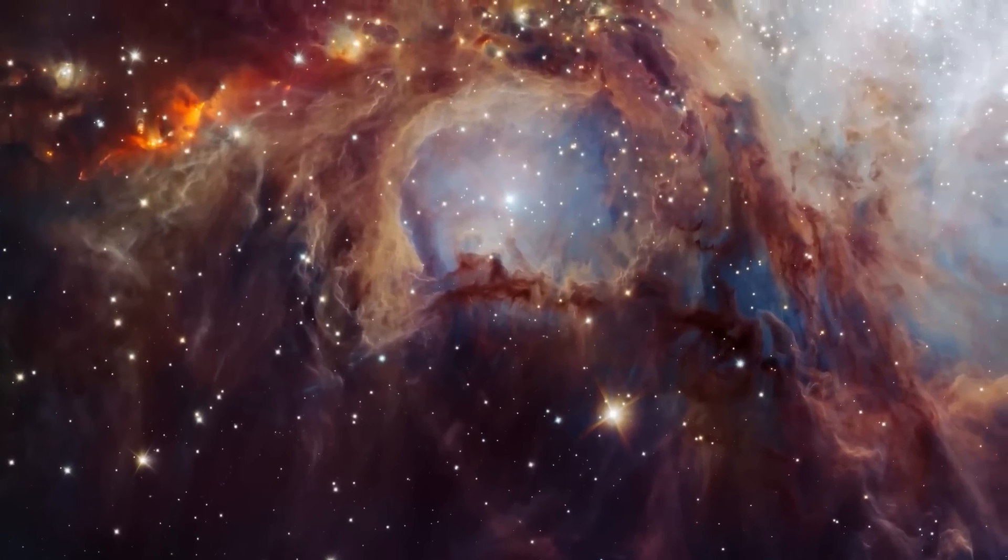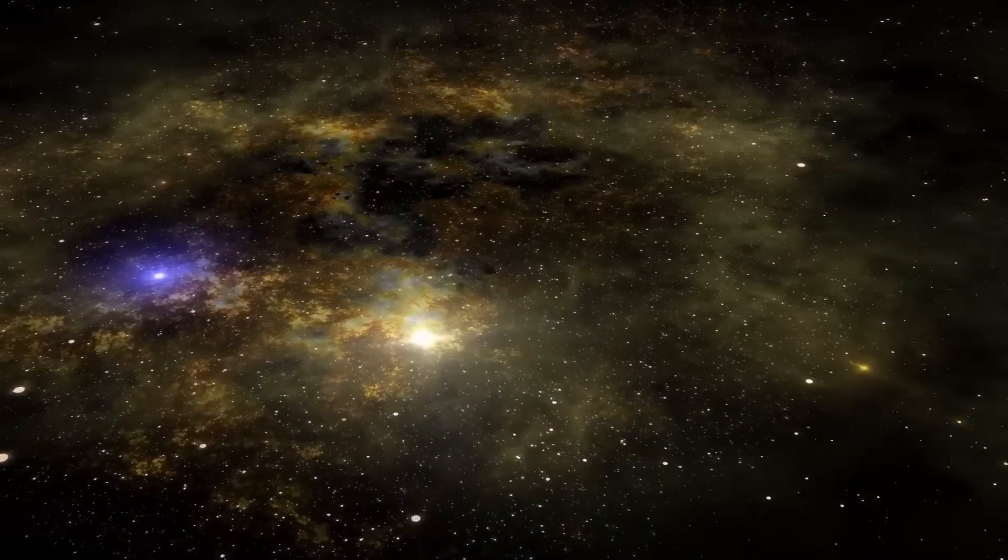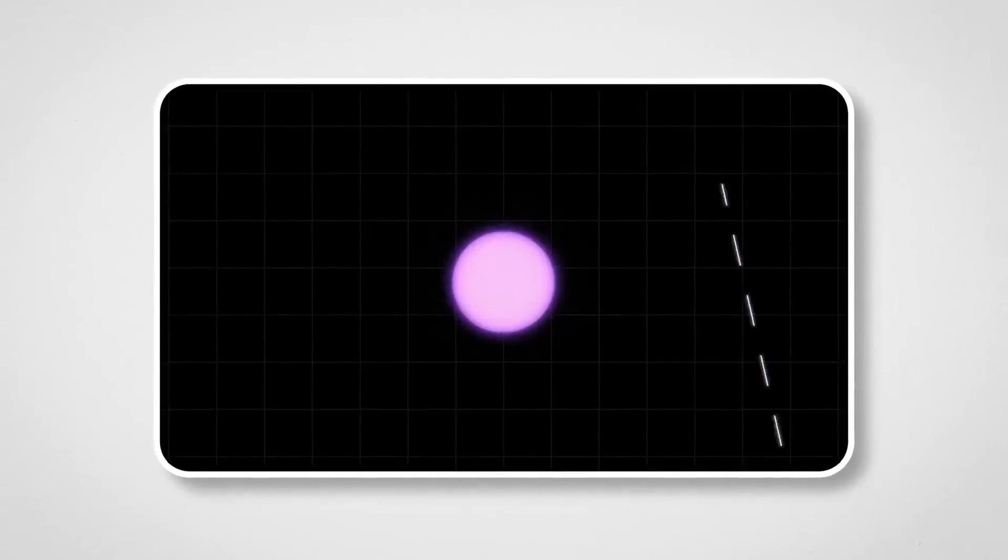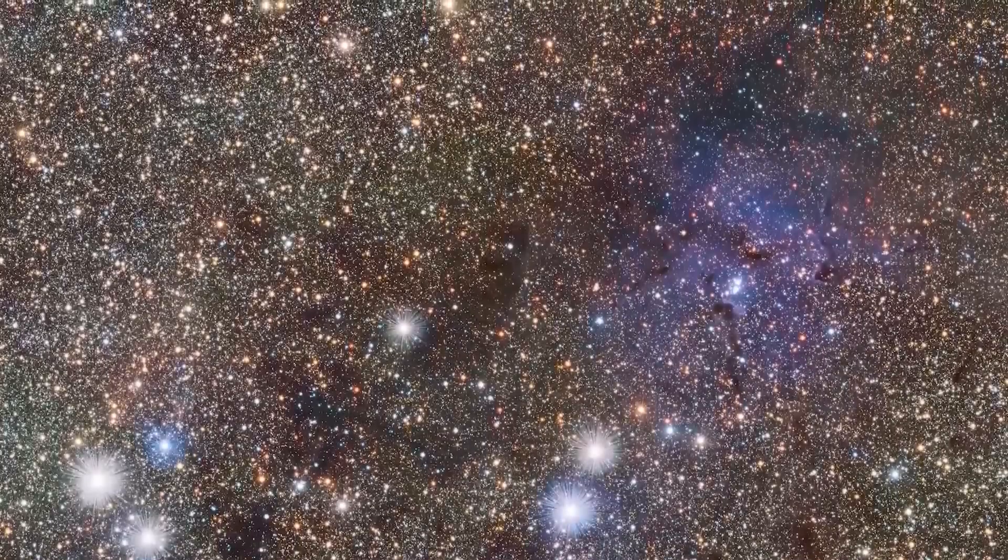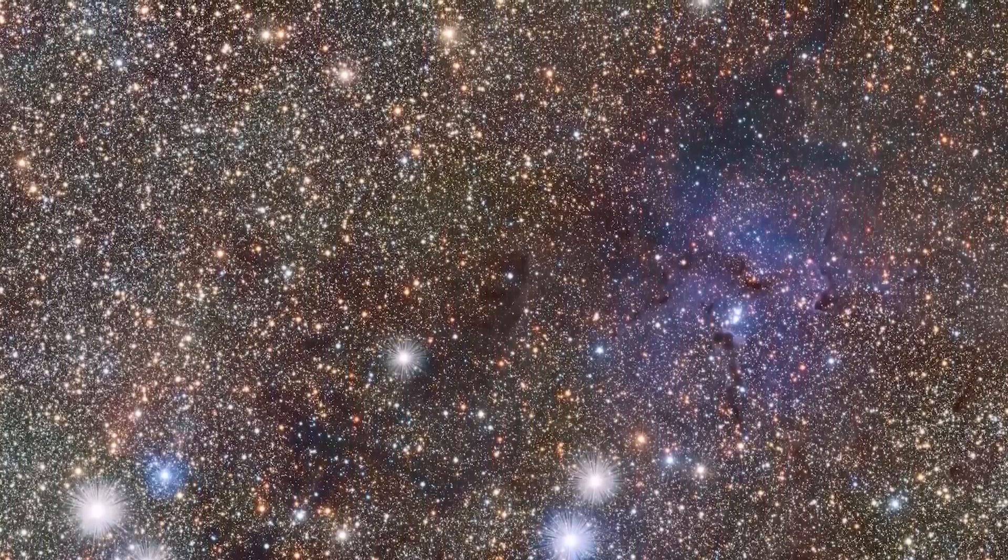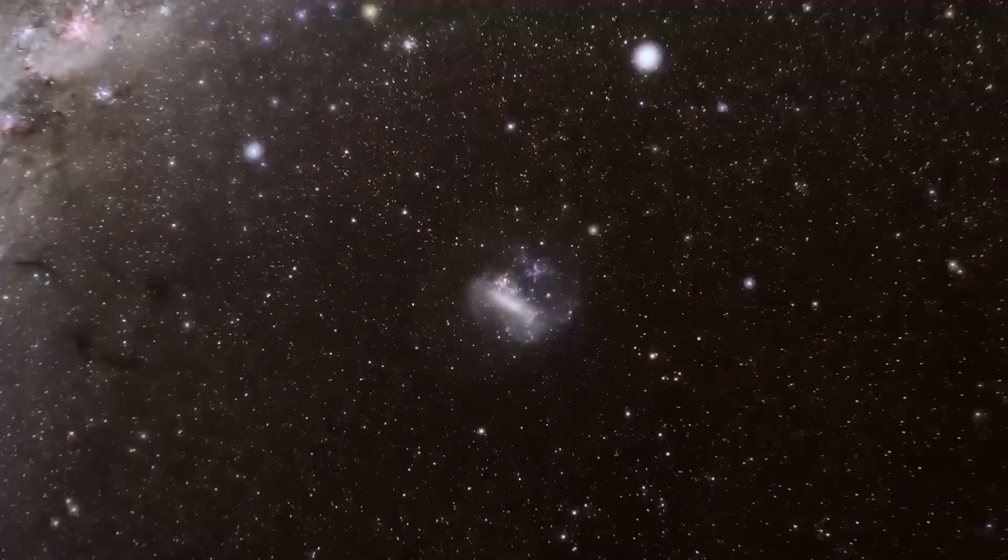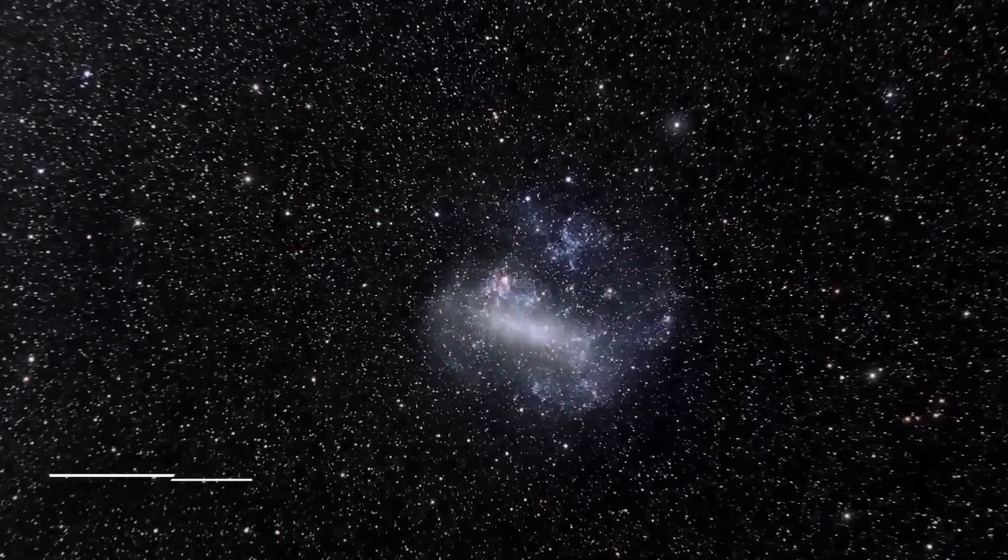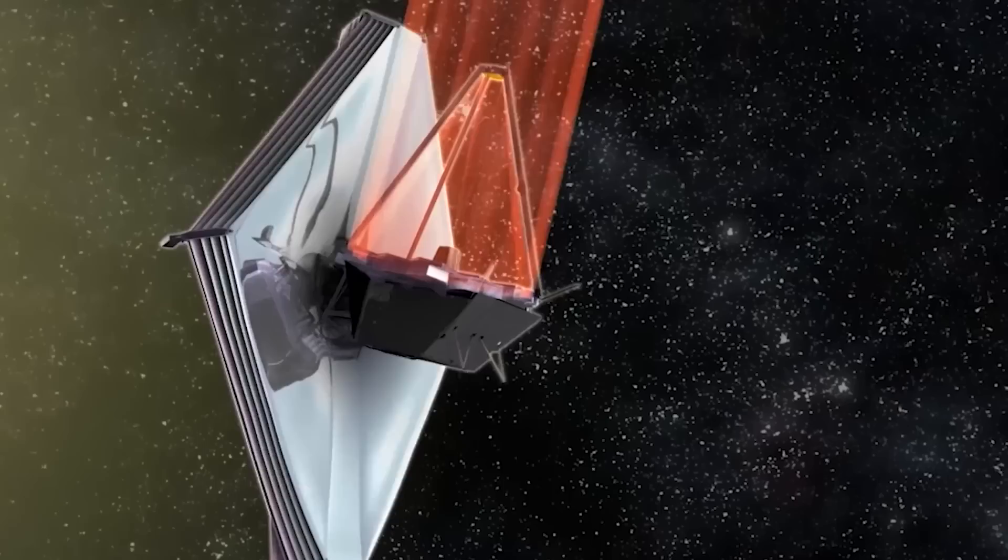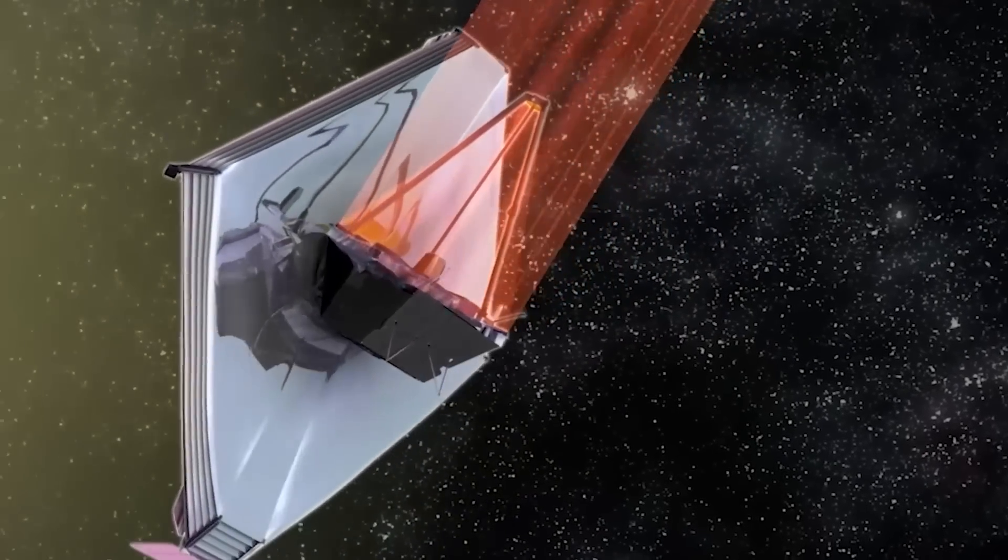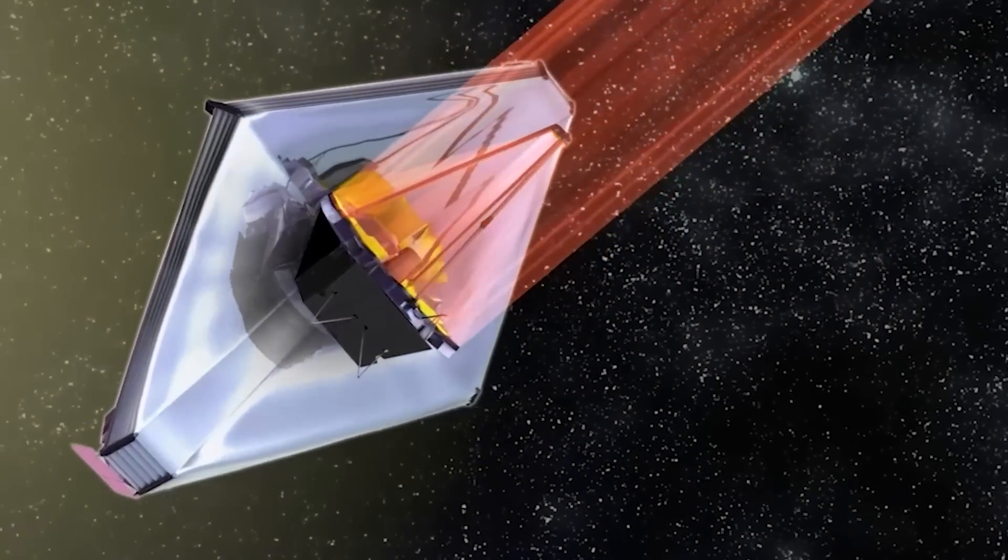Before James Webb came along, getting a clear image of a planet like this was nearly impossible. The problem is that stars are so much brighter than the planets around them. Imagine trying to spot a firefly next to a lighthouse. But Webb's cutting-edge tech changes the game. Its infrared cameras can cut through the glare and show us planets in stunning detail.